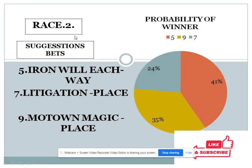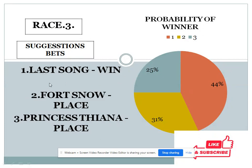Number seven for place in race two. Now we can talk about race three. Three choices are given: number one with 44 percent, number two with 31 percent, and number three with 25 percent. If you see the gap between the top two choices is 13 percent, but when we see the gap between the bottom two choices is less than 10 percent, in this condition our system supports number one for win. In race three, horse number one — last song — should win.